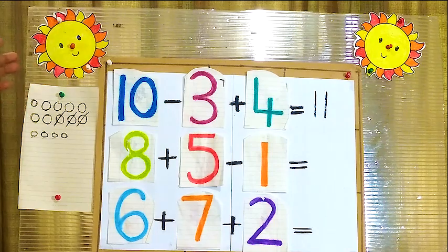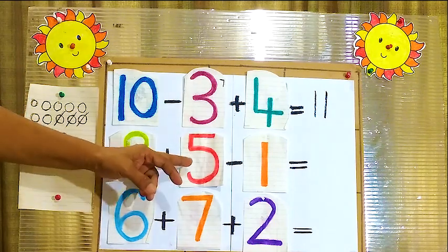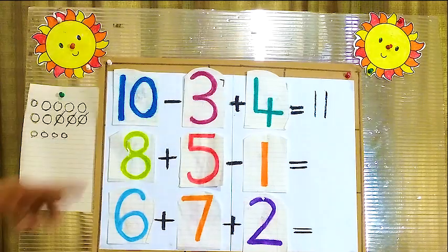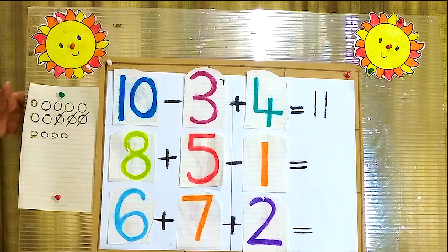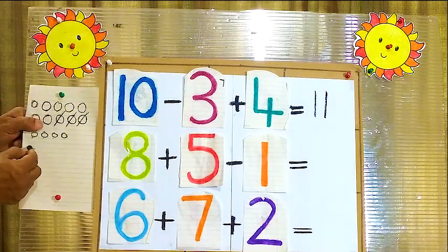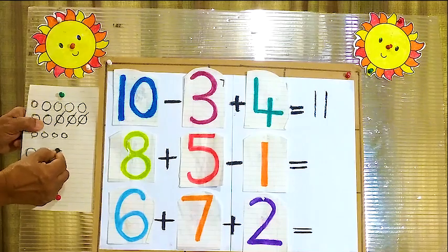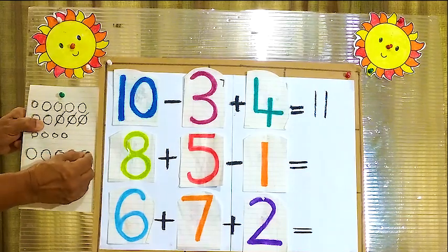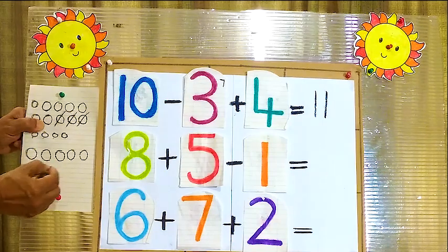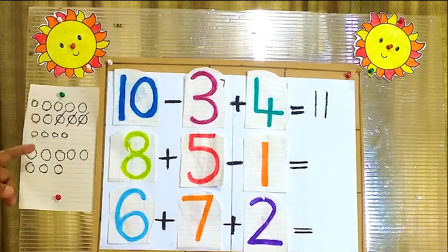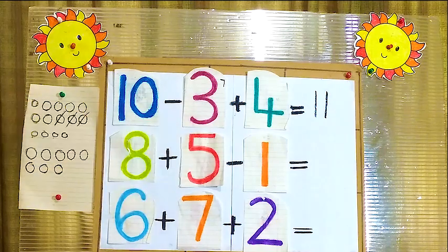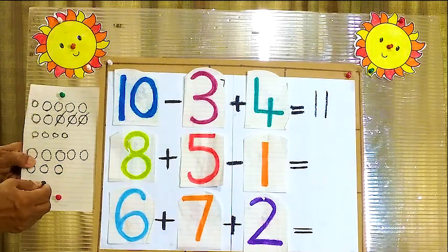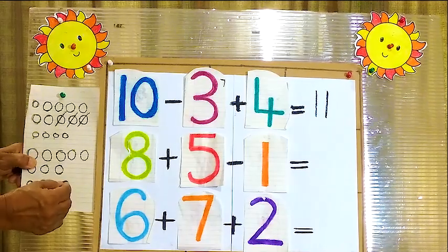Now we will go to the next number: 8 plus 5 minus 1. First we will add 8 and 5. I will draw here 8 balls: 1, 2, 3, 4, 5, 6, 7, 8. Now here 8 and here 5 — then plus 5. I am going to draw here 5 balls: 2, 3, 4, 5.